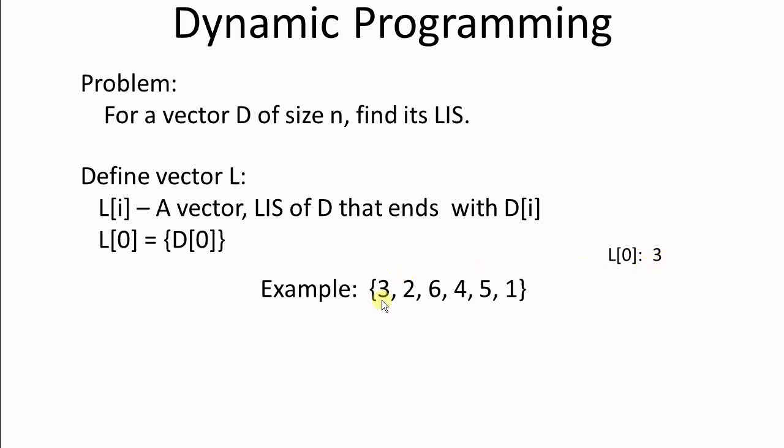l0 must be 3. l1 is 2, because 3 is bigger than 2, so 3, 2 is not increasing. l2 is 2, 6, l3 is 2, 4, l4 is 2, 4, 5, and l5 is 1, because 1 is the smallest.